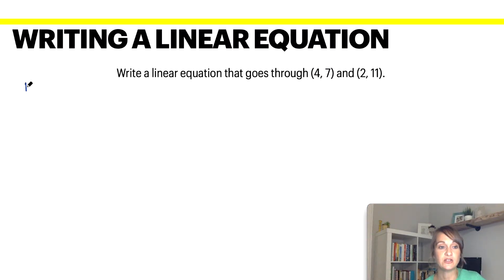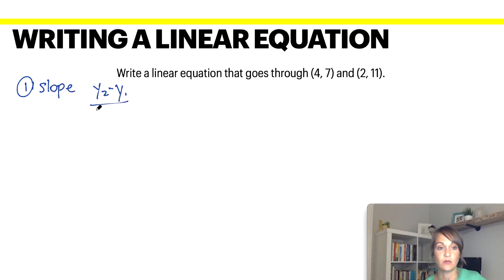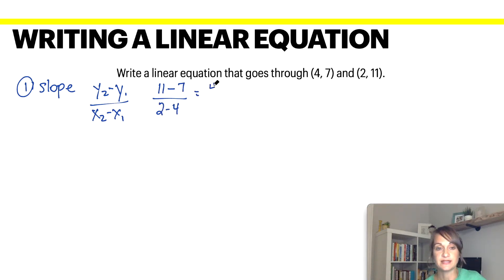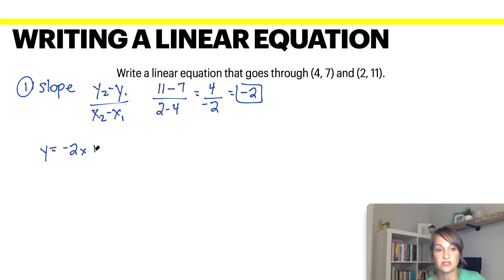To write the equation, the first step is to find your slope. We are going to use the formula y2 minus y1 over x2 minus x1. So between these coordinate points, it would be 11 minus 7 on top and 2 minus 4 on bottom. 11 minus 7 is 4, and 2 minus 4 is negative 2, so your slope is negative 2. Next, you are going to plug your slope into the y equals mx plus b equation.